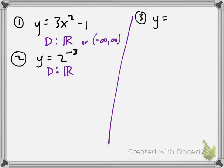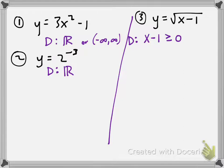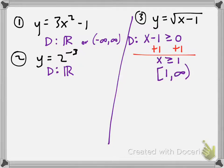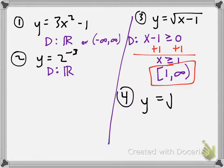y equals the square root of x minus 1. The expression x minus 1 has to be greater than or equal to 0. The restriction on the domain is x minus 1 ≥ 0. Adding 1 to both sides, you get x must be greater than or equal to 1. In interval notation, the domain is [1, ∞).